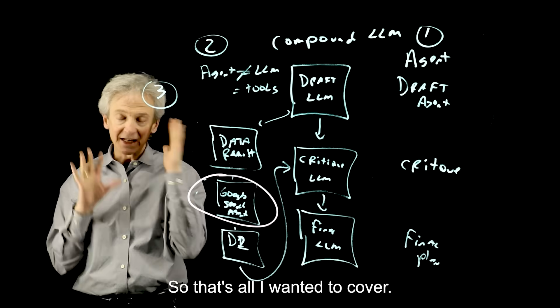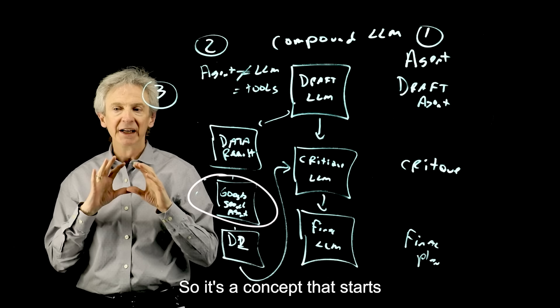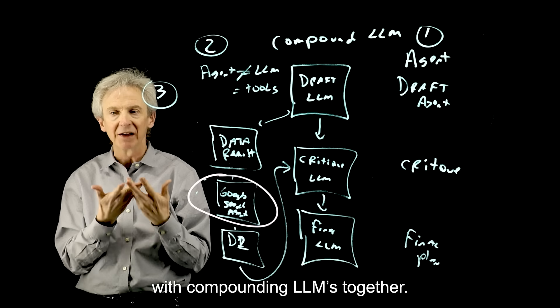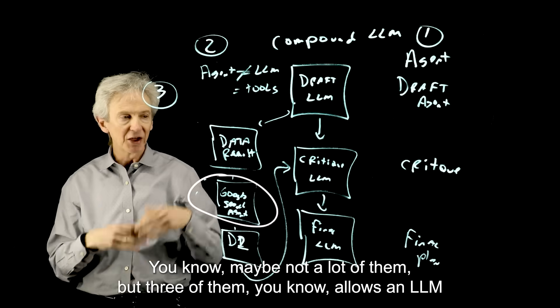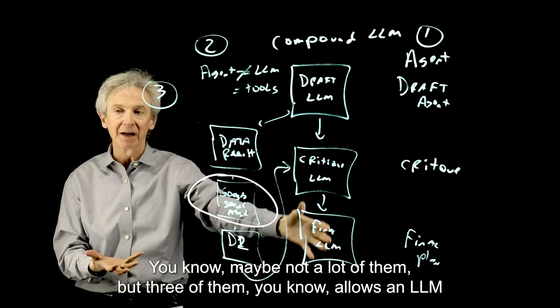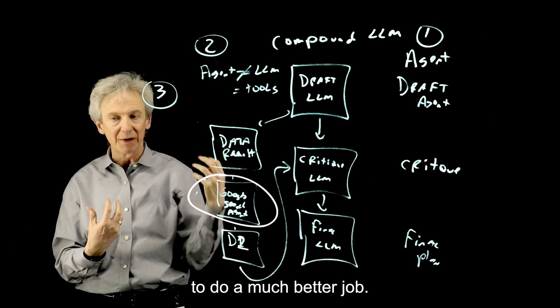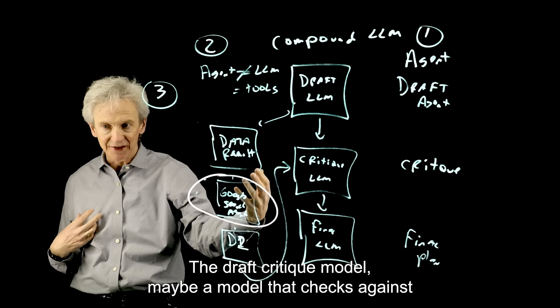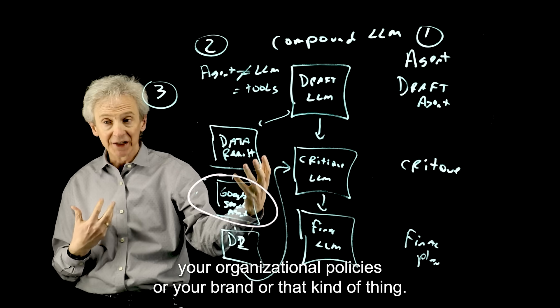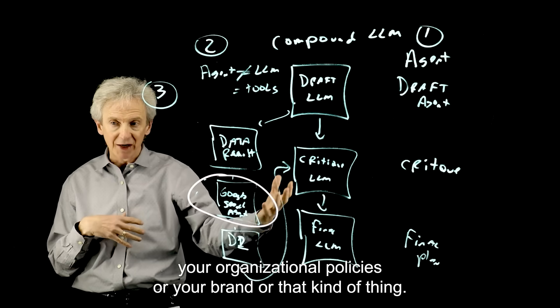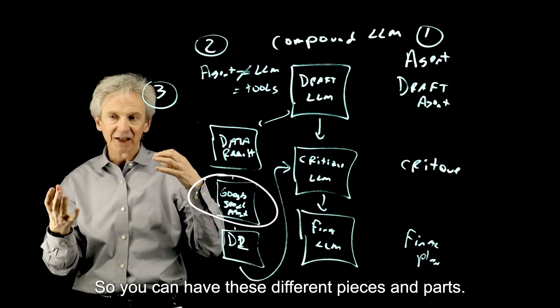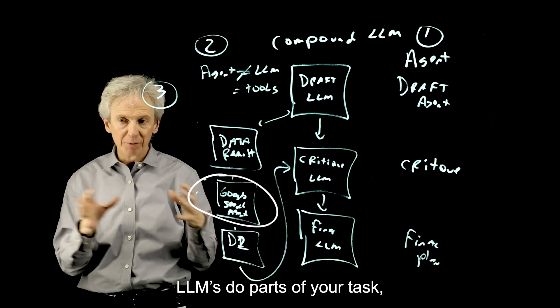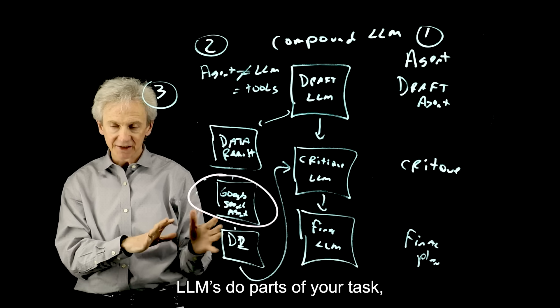So that's all I wanted to cover. So it's a concept that starts with compounding LLMs together. Maybe not a lot of them, but three of them allows an LLM to do a much better job. The draft critique model, maybe a model that checks against your organizational policies or your brand or that kind of thing. So you can have these different pieces and parts. LLMs do parts of your task.